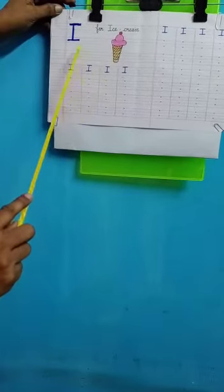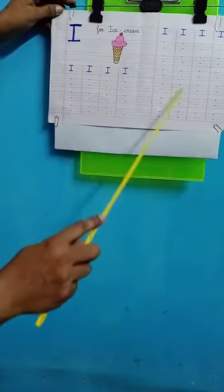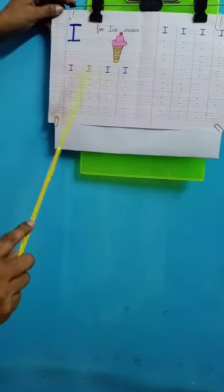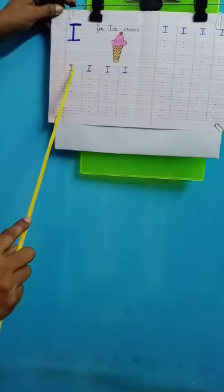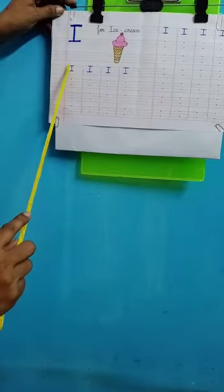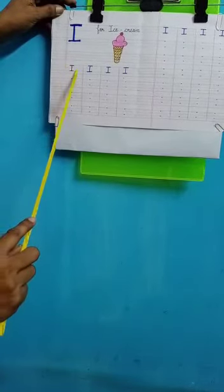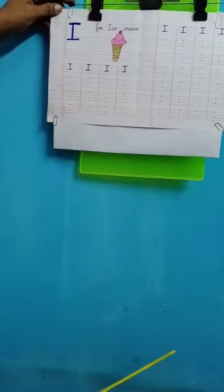So like that you will complete both the pages of I. From the red line to the blue line, a standing line and a sleeping line, one on the red and one on the blue. So you will complete your I. After I, you will go to J.